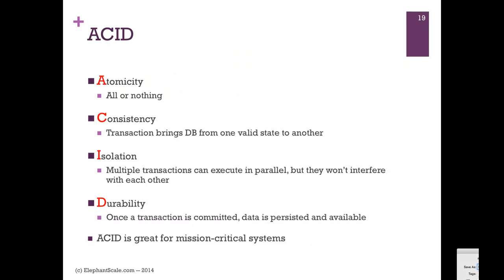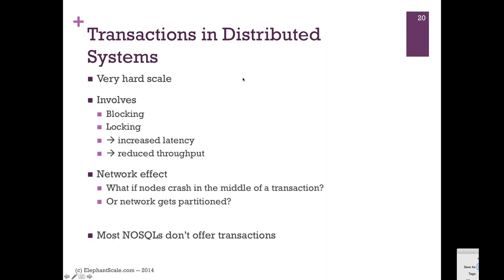A quick recap of ACID: atomicity is all-or-nothing transactions; consistency means your database is always in a consistent state; isolation means multiple transactions don't step on each other's toes; and durability means once you save data, it's safe. Supporting transactions in distributed systems is really hard — you have a cluster of machines to coordinate, and if a node crashes in the middle of a transaction, it's a big problem. That's why NoSQL systems often say they don't support transactions.